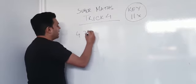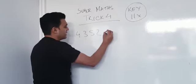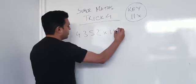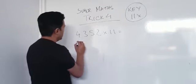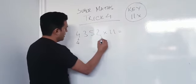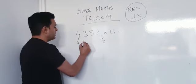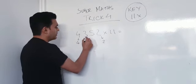4, 3, 5, 2 times 11. 4 and 2. So, we put 4 there. I'll put it down here. 4 there and 2 there. 4 plus 3, 7. 3 plus 5, 8.